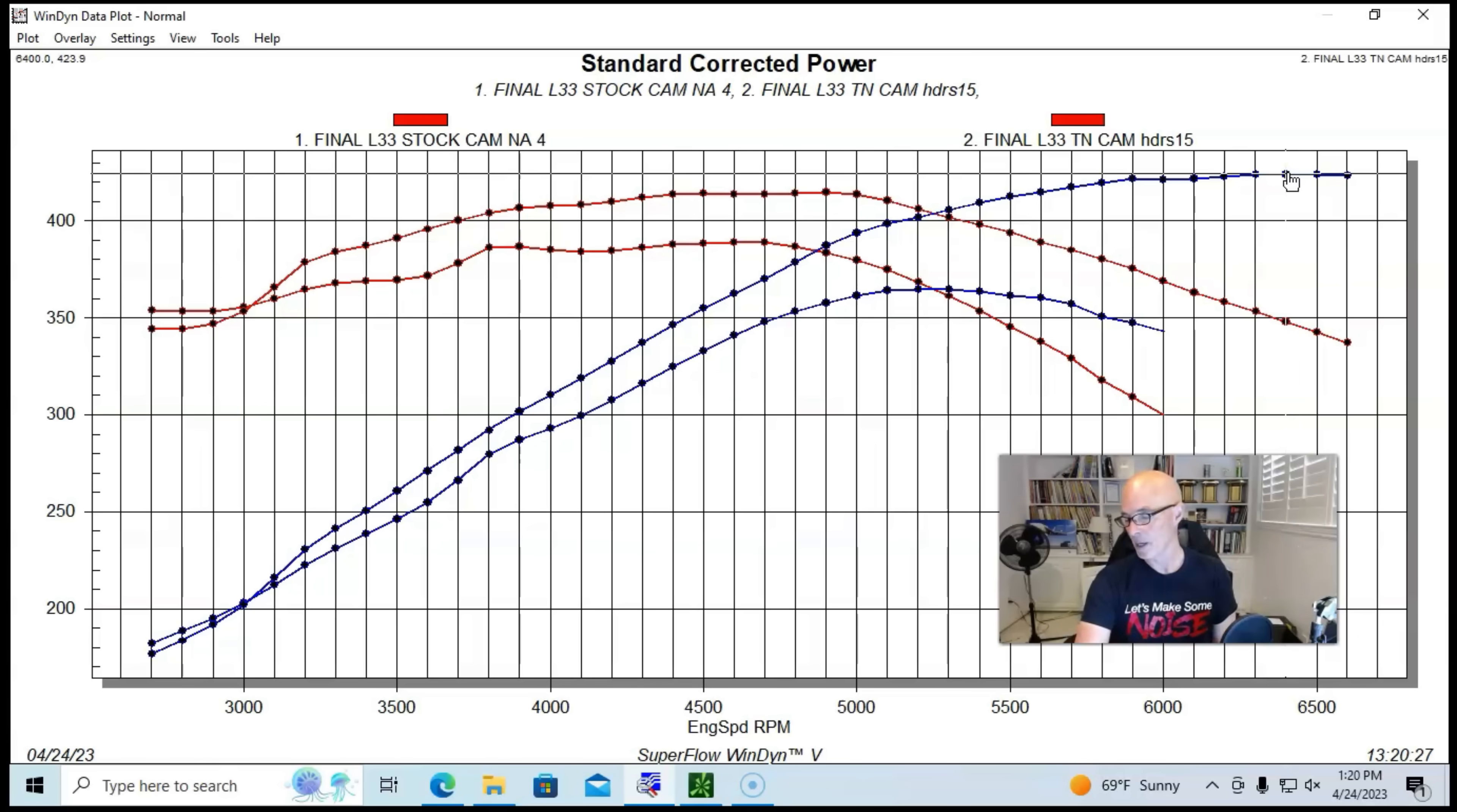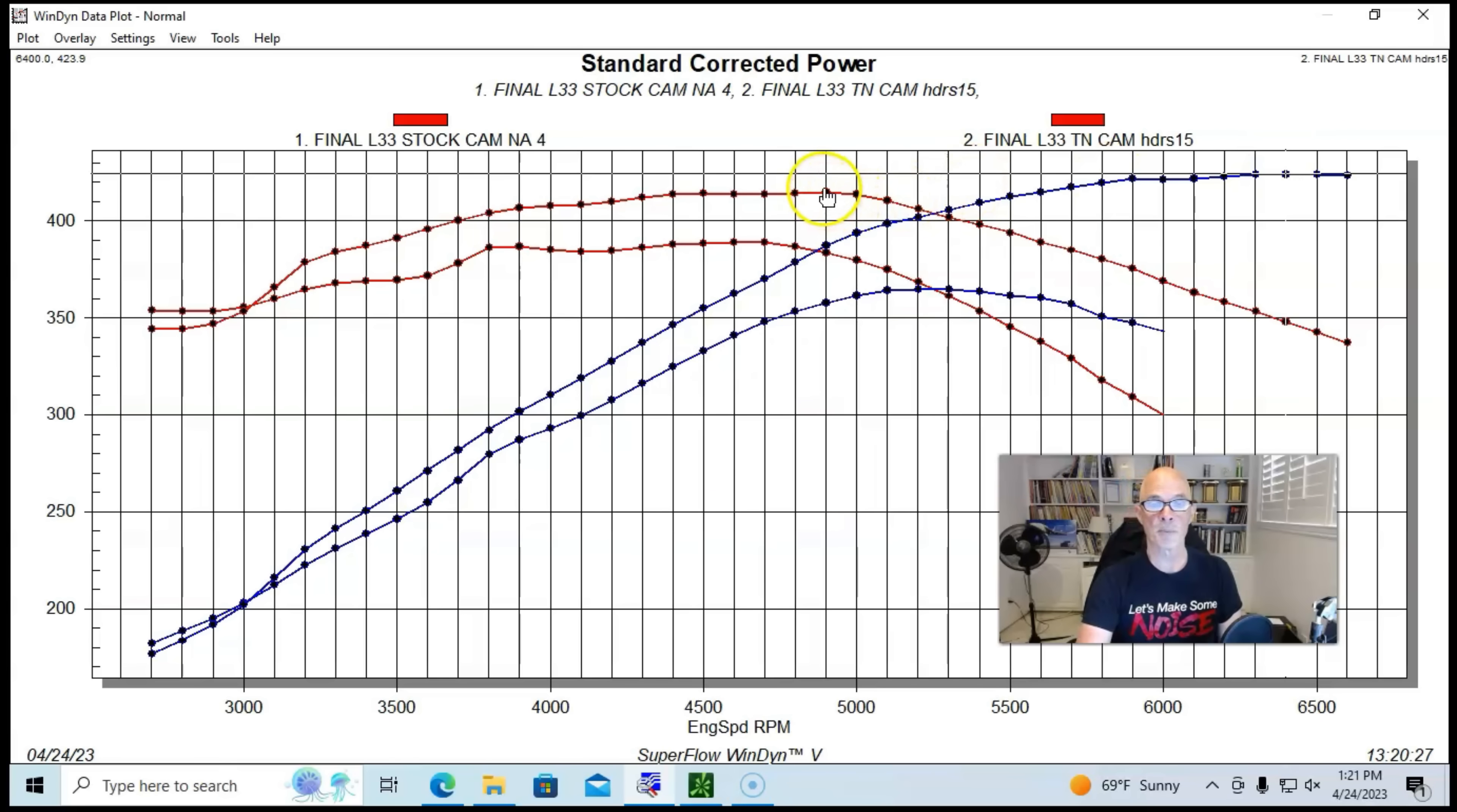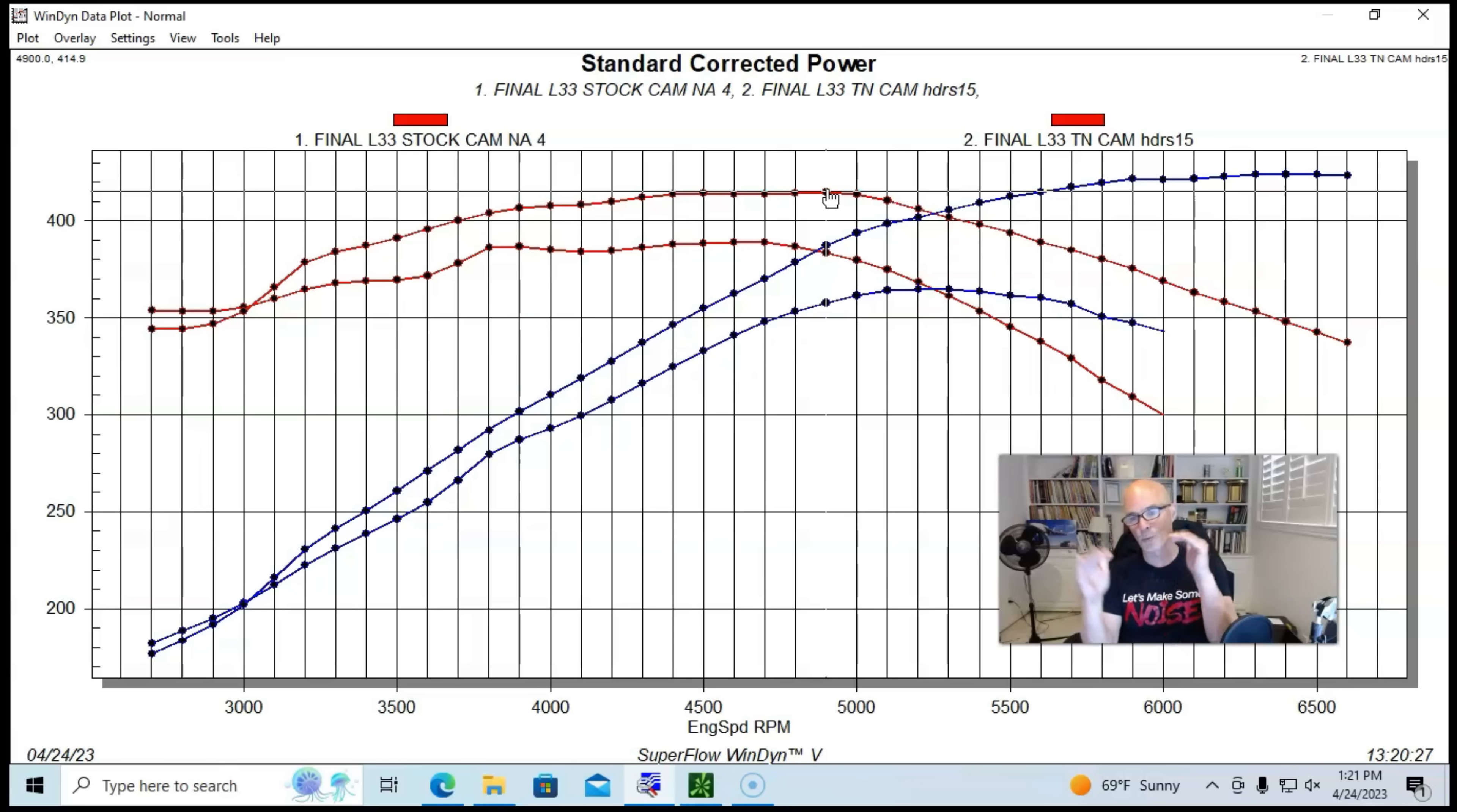But at any rate, when we ran the Truck Norse Cam, the peak power jumped up to 424 horsepower. Peak torque was up at 415 foot-pounds, which means with the Truck Norse Cam, we gained 59 horsepower over the stock cam, and 26 foot-pounds of torque if you're registering peak to peak.